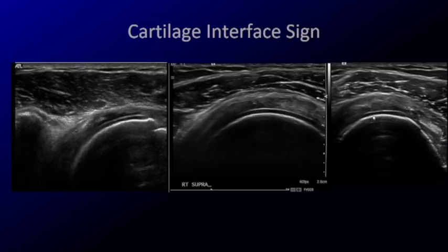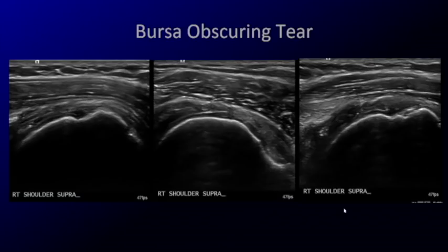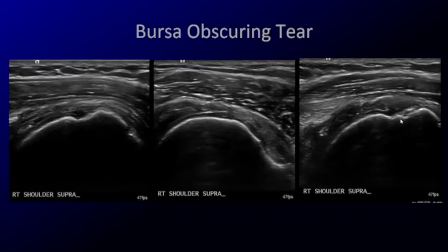These are more subtle cases of a rotator cuff tear — it's easier to call when the cartilage interface is showing up nicely. Another pitfall: doing layer inventory, you might see what you expect to be the rotator cuff, but what you're actually looking at is the bursa — now thickened and abutting the humeral head. Try to angle your transducer, find some tendon fibers, or trace back to see if there is a retracted tendon. Beware of this pitfall: you may be looking at a thickened bursa rather than residual rotator cuff.